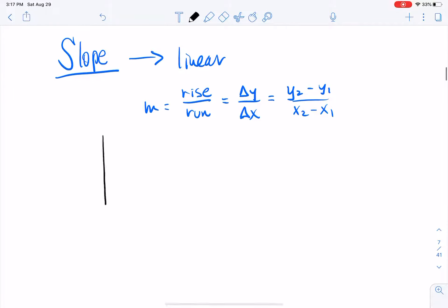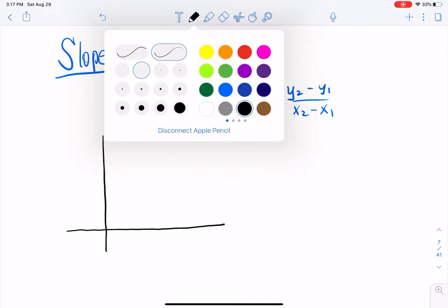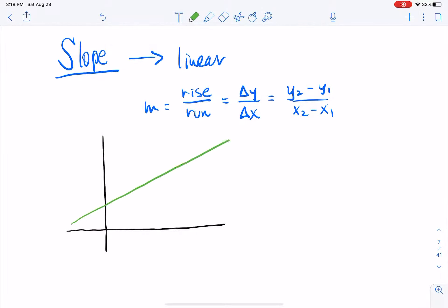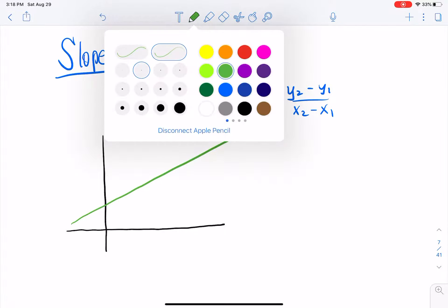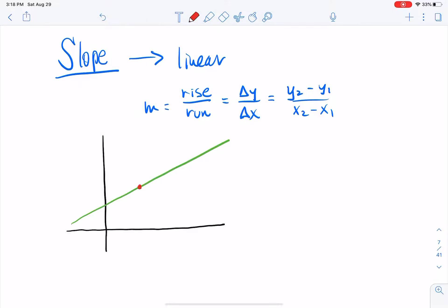And it has a little formula. And that formula is sometimes written in words as rise over run, right? Or perhaps a delta Y over delta X. And delta just means change in. So it's a Y sub 2 minus Y sub 1 over X sub 2 minus X sub 1.